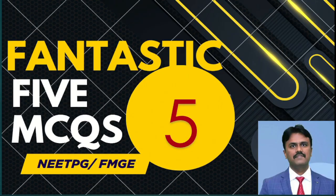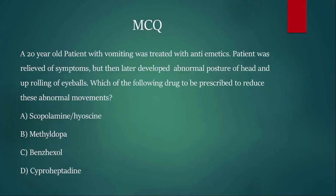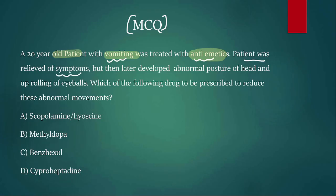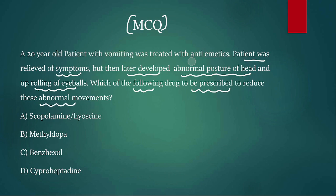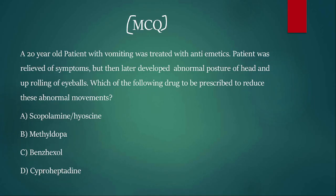Welcome to one more fantastic five MCQs discussion. The first MCQ: a 20-year-old patient with vomiting was treated with antiemetics. The patient was relieved of symptoms, but later developed abnormal posture of the head and uprolling of eyeballs. What drug should be prescribed to reduce these abnormal movements?